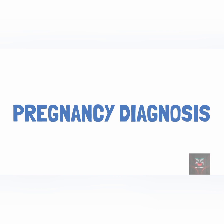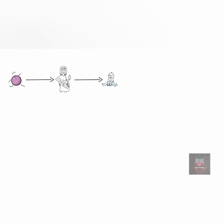Pregnancy is the condition between conception and birth. During this period, the fertilized egg develops in the uterus. In humans, pregnancy lasts about 280 days. Pregnancy usually occurs by sexual intercourse but can also occur through assisted reproductive technology procedures.